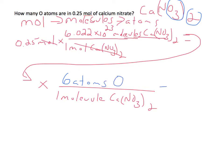And so then we can just solve for that, where molecules are going to cancel. And so we calculate our final answer as 9.0 times 10 to the 23rd atoms of oxygen.